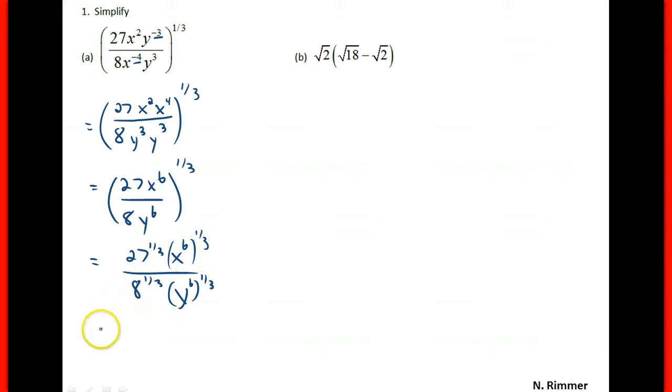So we have the cube root of 27, which is 3, cube root of 8 is 2. When you have a power to another power, you multiply it, so that will be x squared numerator, y squared denominator. And that's the most simplified version of the answer.